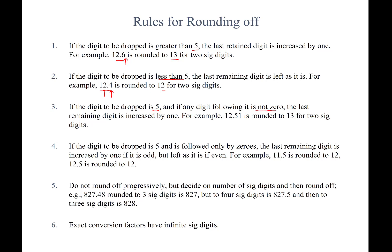Rule 3: if the digit to be dropped is exactly 5 and any following digit is nonzero, the last retained digit is increased by one. For example, 12.451 rounded to two significant figures — drop 5, followed by nonzero digit 1 — rounds up to 13. Rule 4: if the digit to be dropped is 5 followed only by zeros, the last retained digit is increased by one if odd, but left as-is if even. So 11.5 rounded to two digits: 1 is odd, so it becomes 12. And 12.5 rounded to two digits: 2 is even, so it stays 12.